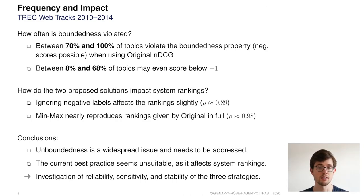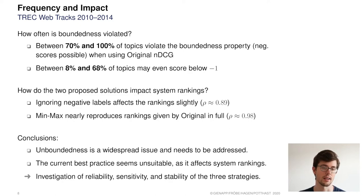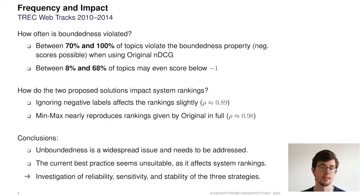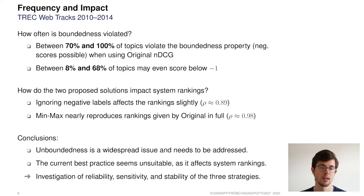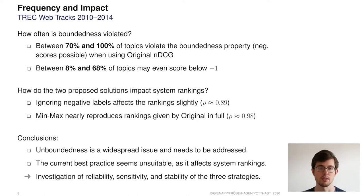The second question is: how do the two proposed solutions impact system rankings? The strategy of ignoring negative labels can affect system rankings slightly, as indicated by a Pearson correlation coefficient of 0.89 compared to the original NDCG ranking. The min-max strategy, on the other hand, nearly perfectly reproduces the original rankings. Thus, the current practice of ignoring negative keywords seems unsuitable, while the novel approach is promising.